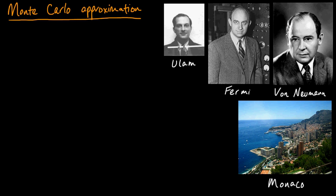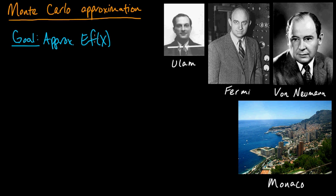Monte Carlo is a method for approximating things using samples. The things which usually need approximating in machine learning and statistics are expectations. So our goal when doing Monte Carlo is to approximate an expectation — say the expectation of some arbitrary real-valued function f of a random variable x. Typically, the reason it needs approximating is because it is intractable to compute exactly in an efficient way.